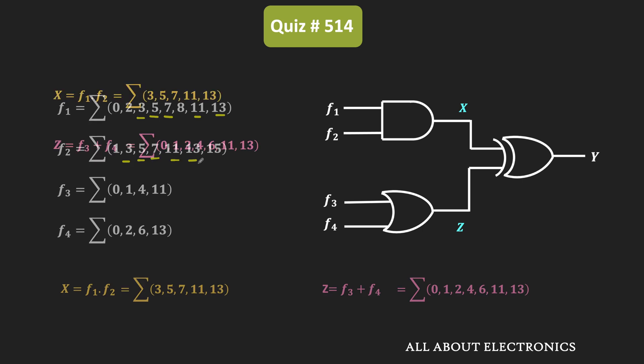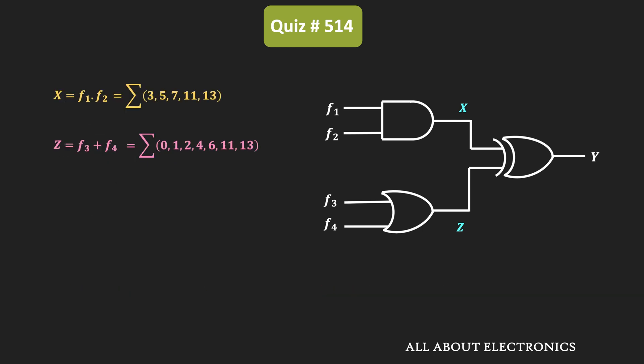So in this way, we got the outputs x, as well as z. And these two outputs are then given to the XOR gate. That means here, this output y is equal to x XOR z.